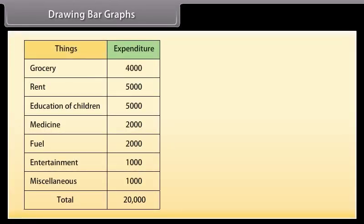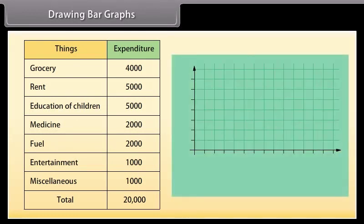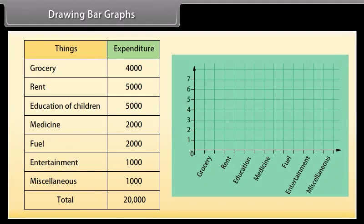Drawing bar graphs. Now we will learn how to draw the bar graph. Look at this table. This shows the data of the expenditure of the family with a monthly income of 20,000. Let us draw a bar graph of this data. For making the bar graph, we use the things given on horizontal axis and expenditure on vertical axis. Mark the things and the expenditure on both the axes. Here one means 1000, two means 2000. Now to represent our first thing, that is grocery, we have to make a bar of unit 4. Similarly, other things are represented leaving a gap of one unit in between two consecutive bars.